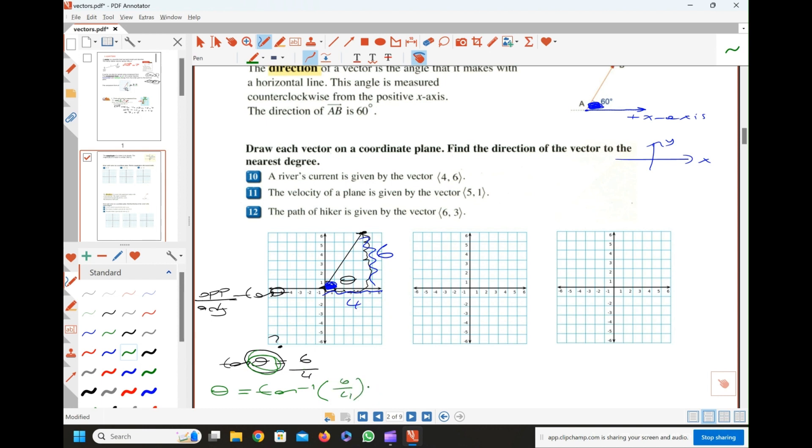Now use your calculators. Write your calculator. Shift, tan, bracket, 6 over 4, close the bracket. It will give you the answer. So you are looking for an approximate result, approximate degree. You have to round it to the nearest degree. It's 56.3 something. You just round it, it becomes 56 degrees. This is how you find the angle formed between positive x-axis and the vector. This was the first question.